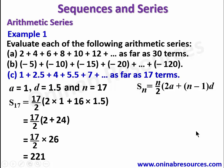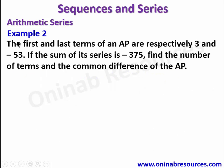So we are done with example 1 and we go to example 2. The first and last terms of an arithmetic progression are respectively 3 and negative 53. If the sum of the series is negative 375, find the number of terms and the common difference.